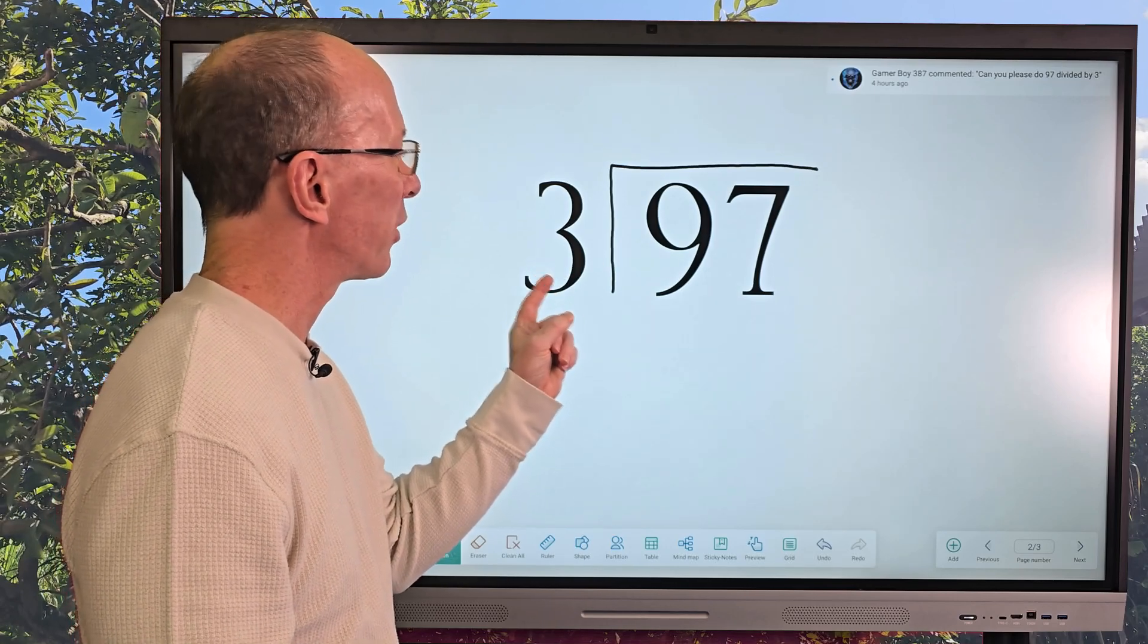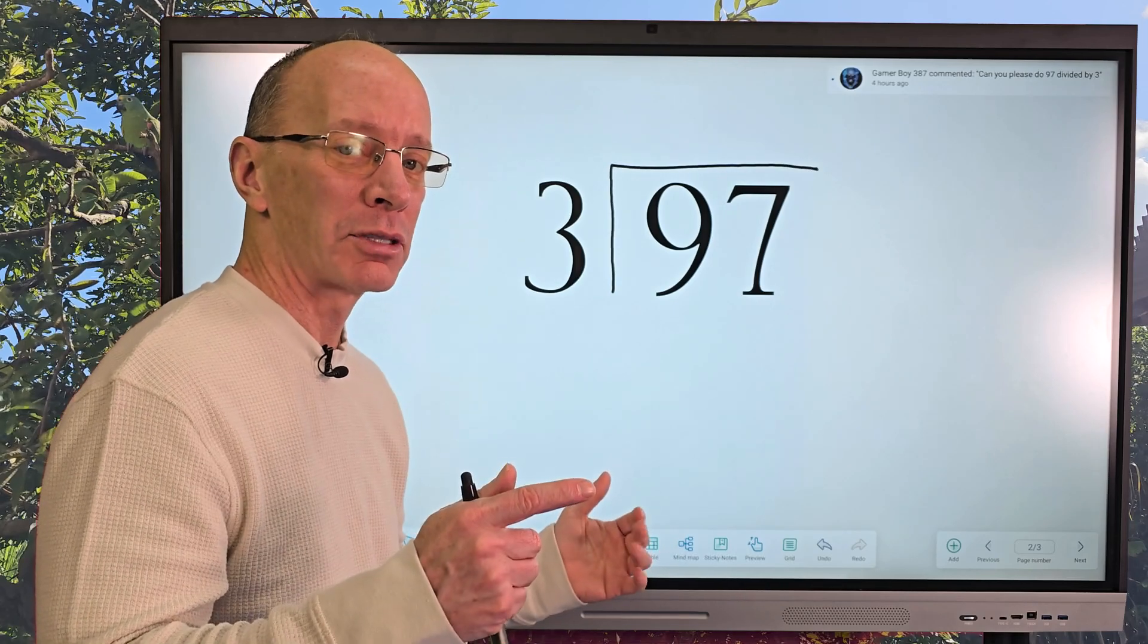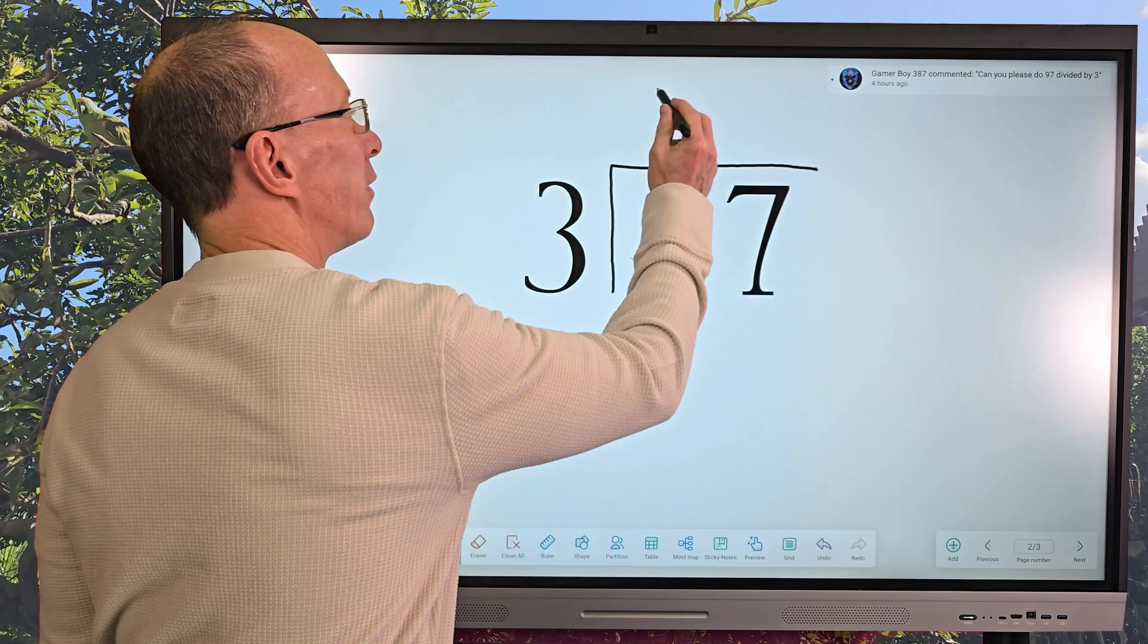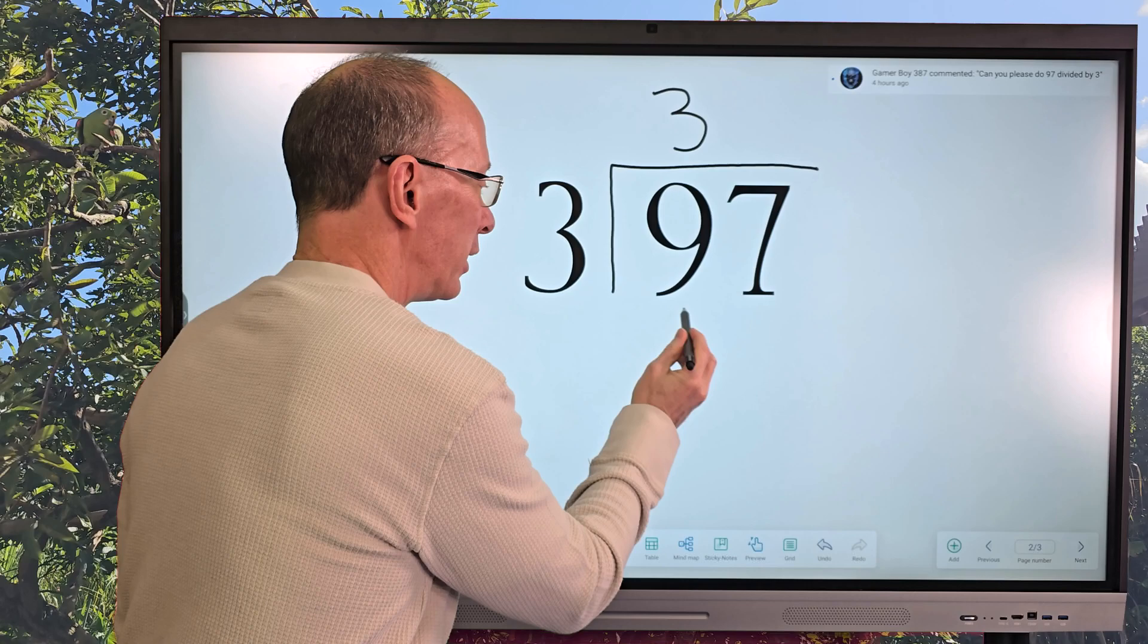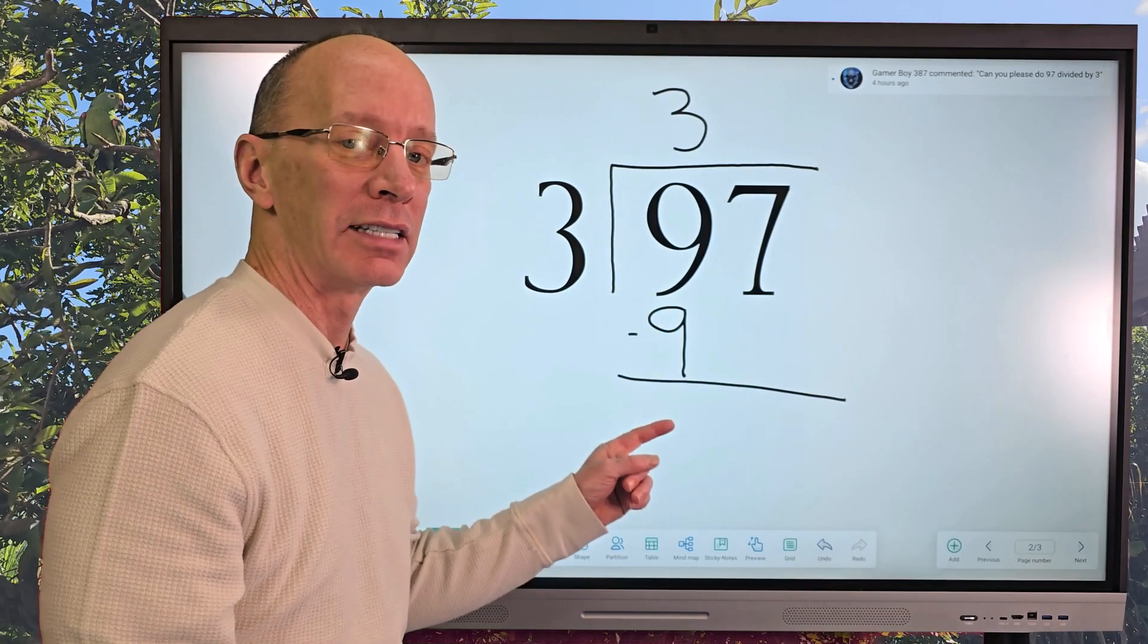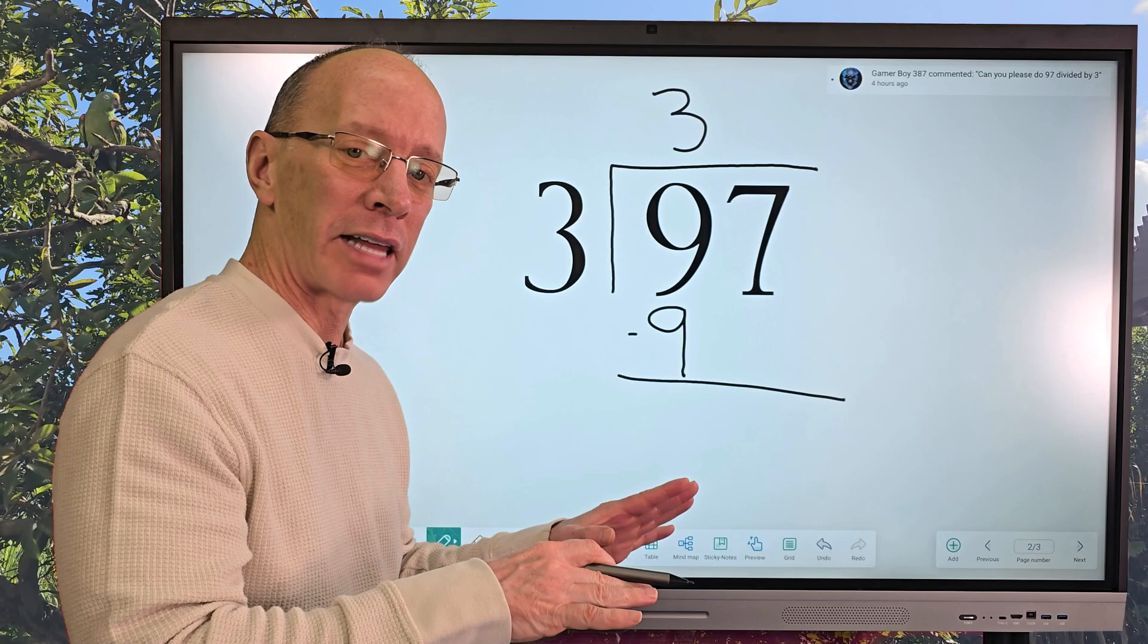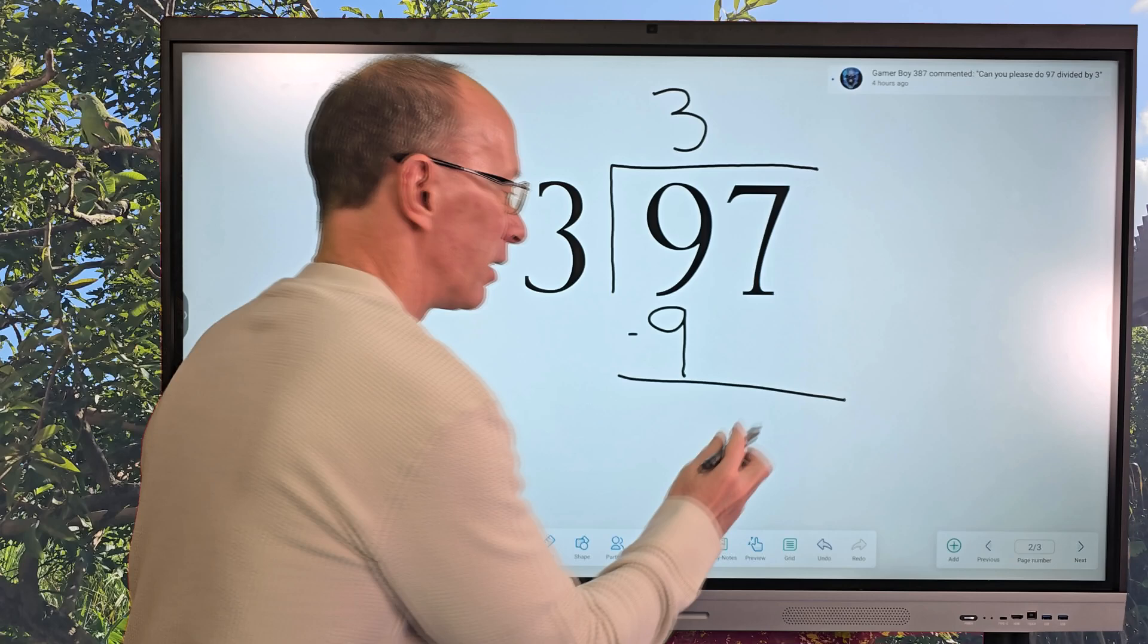How many times can I put 3 into 9? 3 times 2 is 6. 3 times 3 is 9. So that would be it. So I'm going to put 3 right here. And then I take 3 times 3 equals 9. So I put 9 here. And my next step is subtraction. So I'm going to go ahead and subtract that. 9 minus 9 is 0. We don't even have to put 0 there. And our next step after that is to drop the next number down. We're going to bring this 7 all the way down here.